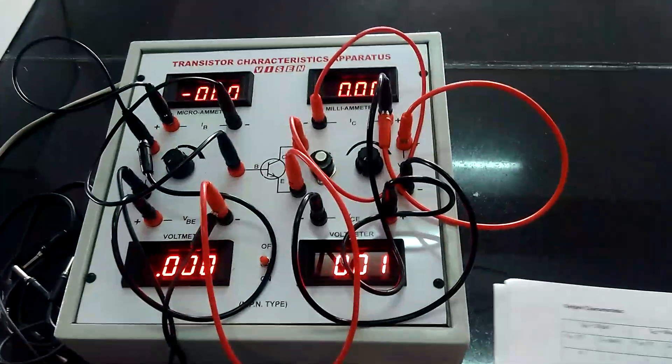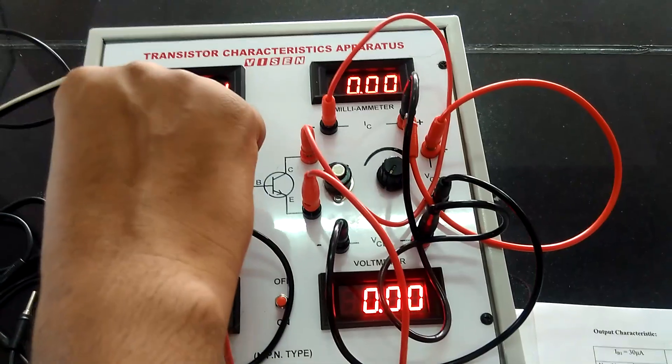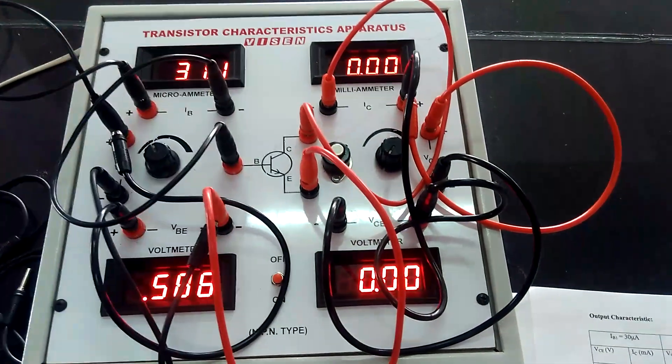Output characteristics has been done. For output characteristics, make it 30 microampere constant, 30 microampere, okay.